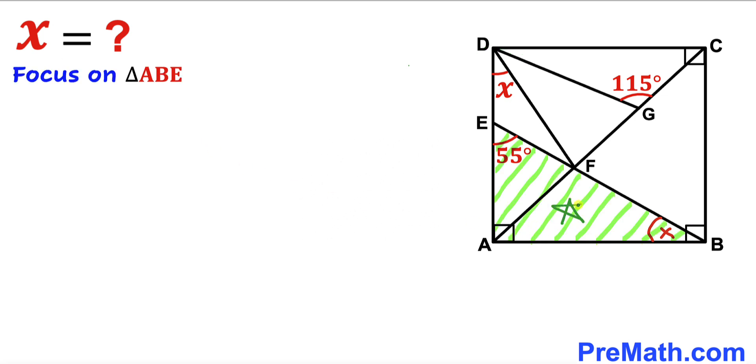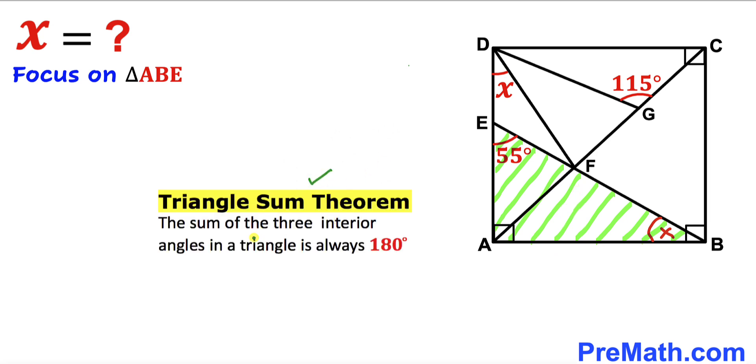Let's focus on right triangle ABE. Recall the Triangle Sum Theorem: the sum of the three interior angles in a triangle equals 180 degrees. Therefore, angle x plus 90 degrees plus 55 degrees equals 180 degrees.